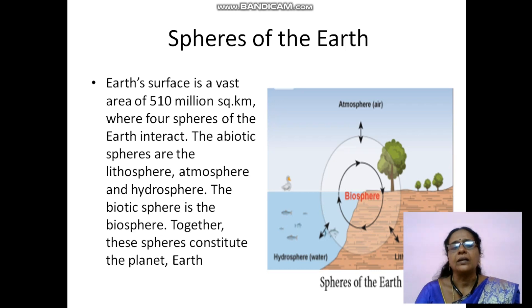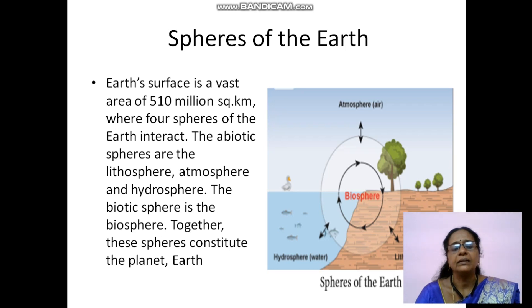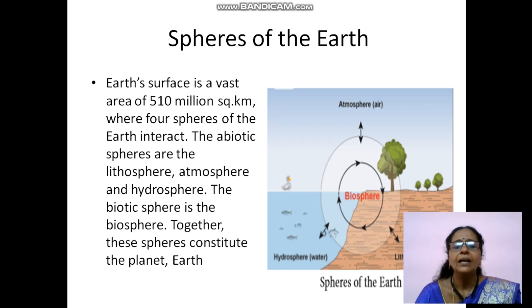Abiotic means where life does not exist - we can't live. Biotic means life exists, where we can live. For example, if we have only land, only gas, or only water, we can't live. We need all three things together. All three abiotic spheres together support the biotic sphere - the biosphere. All these 3 spheres together are found only on earth.